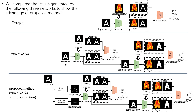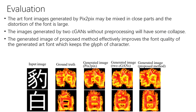In the last part of evaluation, we compare the results generated by two other networks to show the advantage of the proposed network: the Pix2Pix model, which consists of only one CGAN, and the two CGANs without using skeletons and edges as auxiliary input. The results show that the AdFont images generated by Pix2Pix may be mixed in closed parts and the distortion of the font is large. The images generated by two CGANs without pre-processing will have some collapse. The generated images of the proposed method effectively improve the font quality, keeping the glyph of the character. In other words, the proposed method achieves better results than the other two networks.